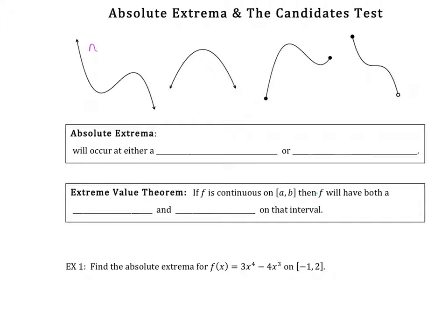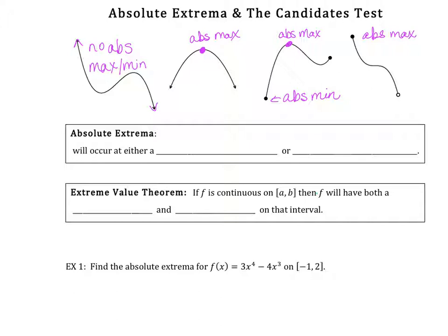If you look at these graphs, you can see that there's no absolute max or min here, because you have arrows going up forever and down forever. This particular graph has an absolute max but no absolute min. This next graph has an absolute max and a lowest point — that's going to be an absolute min. And that last one definitely has an absolute max, but notice the open circle, so that doesn't count. You have to have a point to be an absolute max or min, and open circles don't count.